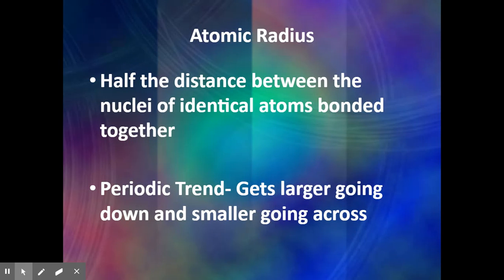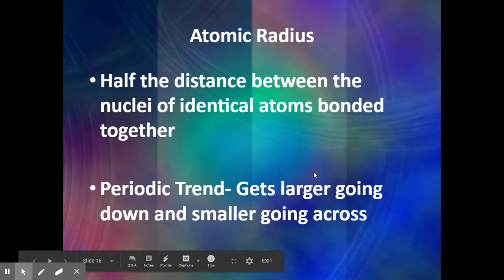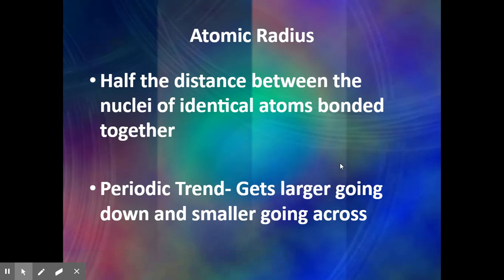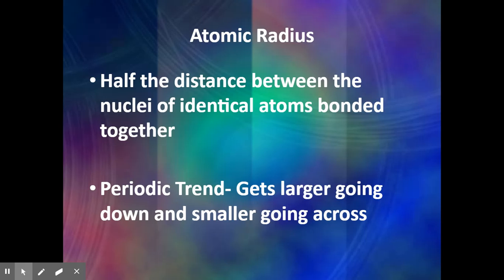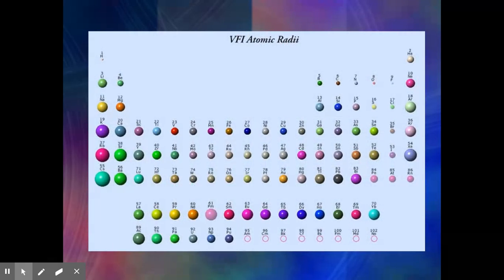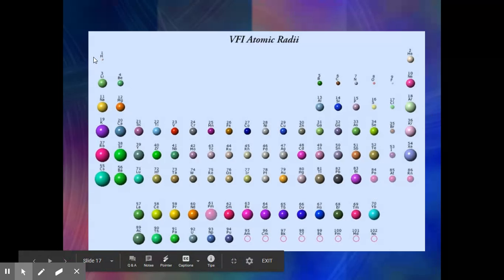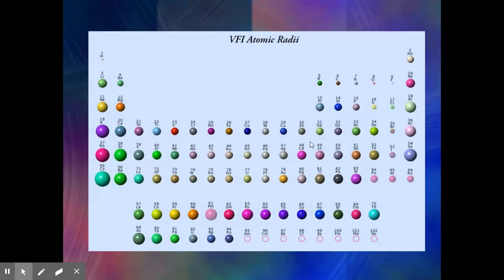Next we'll look at a few definitions and how they trend across the periodic table. Atomic radius is the radius of an atom — from the nucleus out to where it would bond to something else; half that distance is the atomic radius. It gets larger as we go down the periodic table because you're adding energy levels. It gets smaller as we go across because electrons are being pulled in tighter to the nucleus.